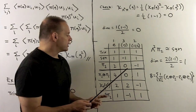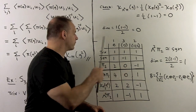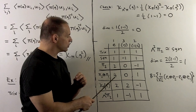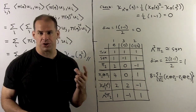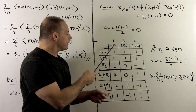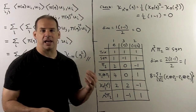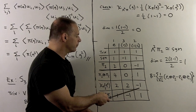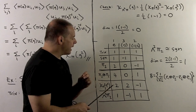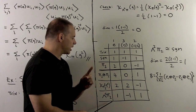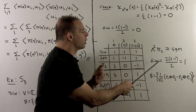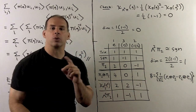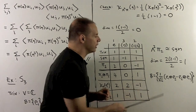For something non-trivial, let's consider the irreducible two-dimensional representation of S3. We apply our character formula: take the character of pi_2 and square it, so 2 goes to 4, 0 to 0, minus 1 to 1. Then we want the character evaluated at each g squared. The identity squared gives the identity, so we get 2. One-two squared gives the identity, so we get 2. One-two-three squared gives one-three-two, which is in the same class, so we get minus 1. We take the difference and divide by two, giving 1, minus 1, 1 for the alternating two-tensors. This means alternating two-tensors are equivalent to the sign representation. We check the dimension: 2(2-1)/2 equals 1, and for the orthonormal basis we have the wedge of u1 and u2.